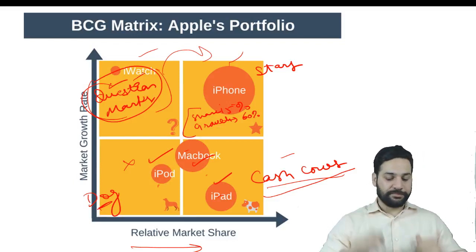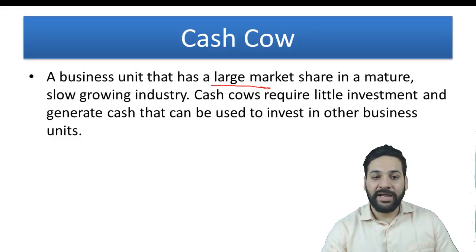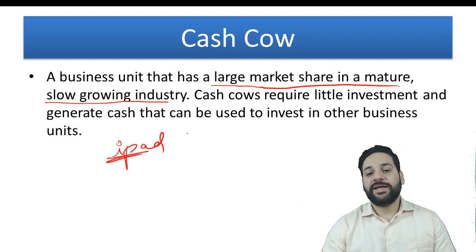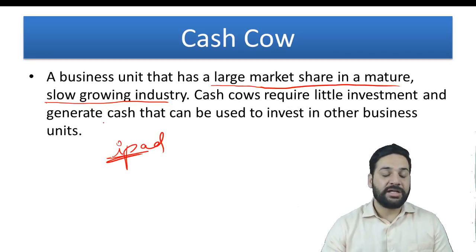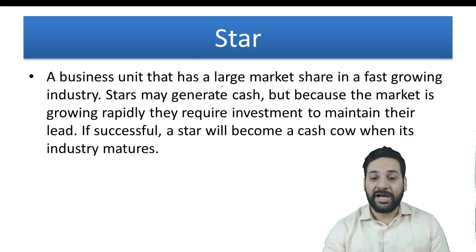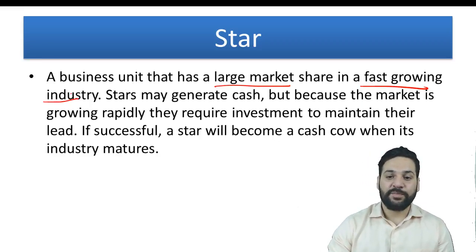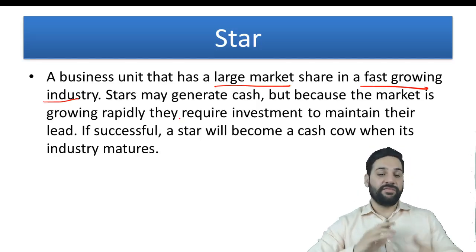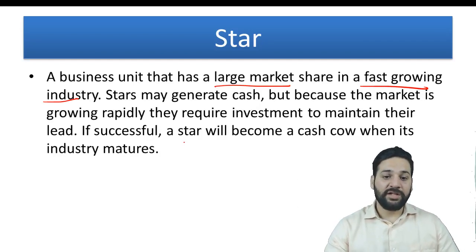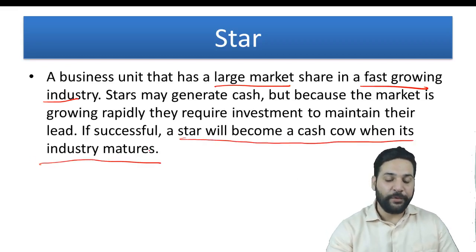Cash cows have a large market share in a mature and slow-growing industry — iPad is a classic example. A cash cow requires little investment but can generate a lot of cash. A star is a business unit that has a large market share in a fast-growing industry — smartphones are a classic example. A star may generate cash but because the market is growing rapidly and competition is fierce, it requires investment to maintain the lead.